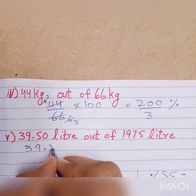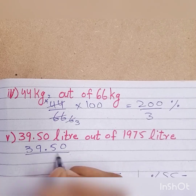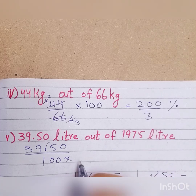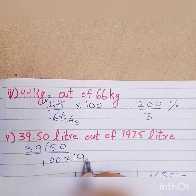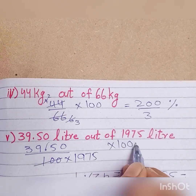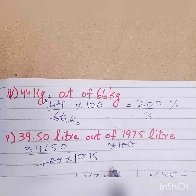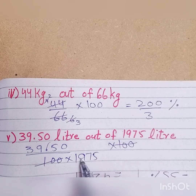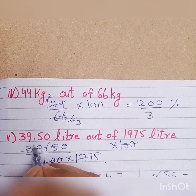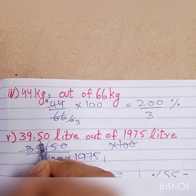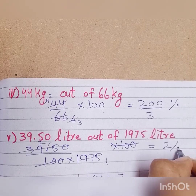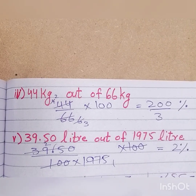We have 39.50. First we remove the decimal — this becomes 1,975 multiplied by 100, and the 100s cancel. We get 1,975 divided by 2, which gives 3,950. So the answer is 2 percent. With that, question number 3 is complete.